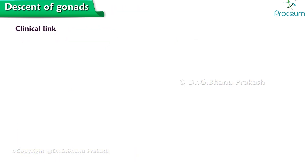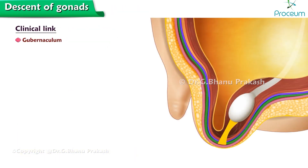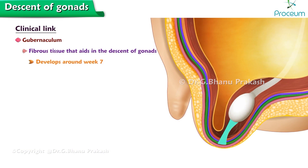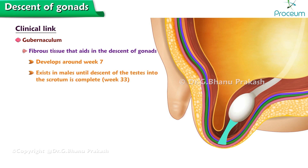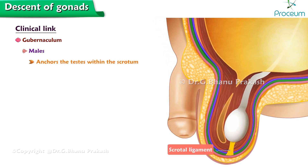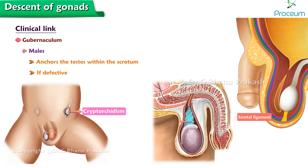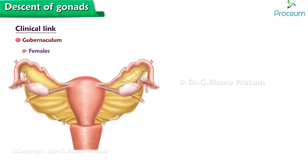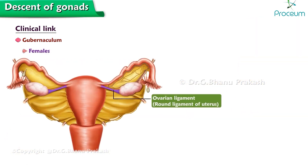Let's take a look at the clinical link of this process. The gubernaculum is a fibrous tissue that aids in the descent of the gonads. It develops around week 7 and exists in males until the descent of the testes into the scrotum is complete, typically by week 33. In males, the gubernaculum anchors the testes within the scrotum, named the scrotal ligament. If defective, it is associated with cryptorchidism and testicular torsion. In females, it forms the ovarian ligament, that is, the round ligament of the uterus. If dysfunctional, it can cause abdominal translocation of the ovaries.